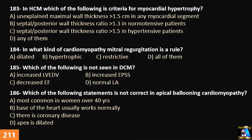Question 183: In hypertrophic cardiomyopathy, which of the following is the criteria for myocardial hypertrophy? A) unexplained maximal wall thickness more than 1.5 cm in any myocardial segment, B) septal to posterior wall thickness ratio more than 1.3 in a normotensive patient, C) septal to posterior wall ratio, or D) any of them.